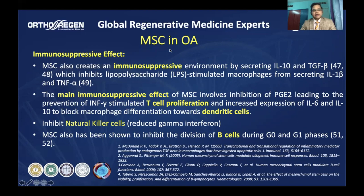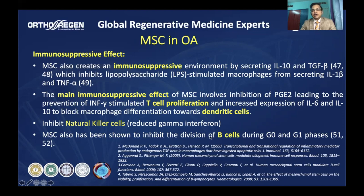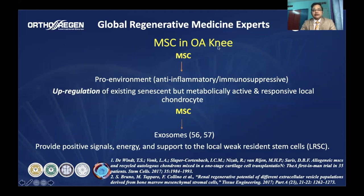The second aspect is immunosuppressive or immunomodulatory function. These stem cells provide an immunosuppressive environment by secreting interleukin-10 and TGF-beta (transforming growth factor beta). As a result, LPS-stimulated macrophages do not release interleukin-1 and TNF-alpha. They also inhibit T cell proliferation via prostaglandin E2, inhibit differentiation of macrophages toward dendritic cells, inhibit natural killer cells, and inhibit division of B cells — affecting all components of acquired immunity.